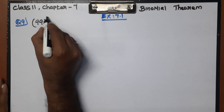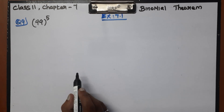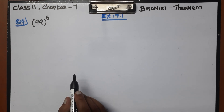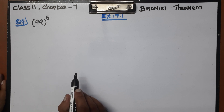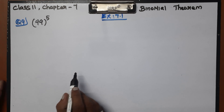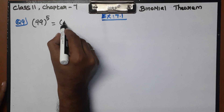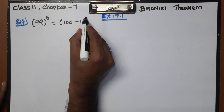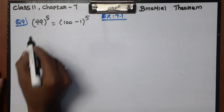Evaluate 99 whole power 5 by using the Binomial Theorem. We can write 99 as 100 minus 1, so we need to expand (100 - 1) whole power 5.